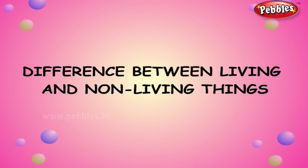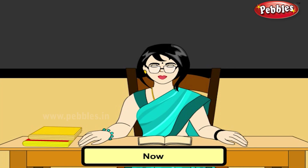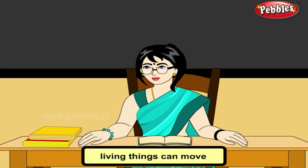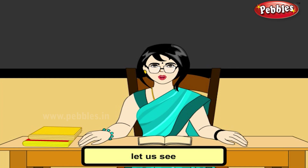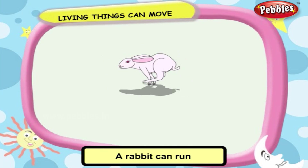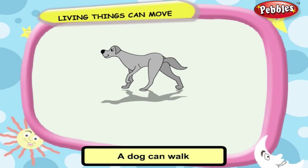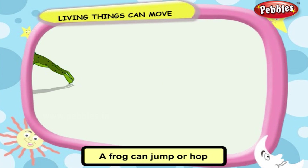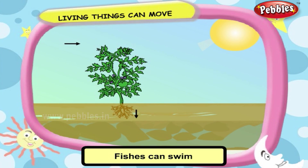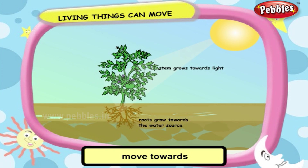Difference between living and non-living things. Now, let us see how we differentiate between a living thing and a non-living thing. Living things can move. They move from place to place in search of food and to take shelter. A rabbit can run. A dog can walk. A frog can jump or hop. Fishes can swim. And some parts of the plant move towards the sunlight.